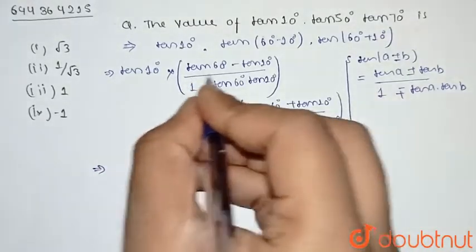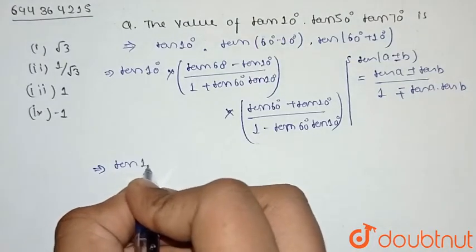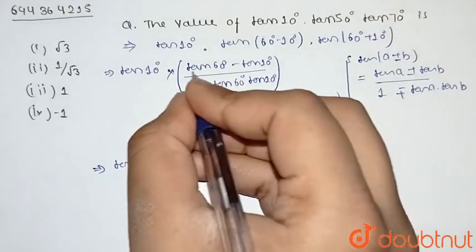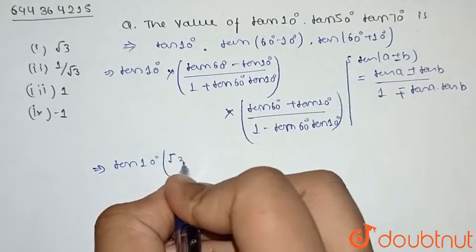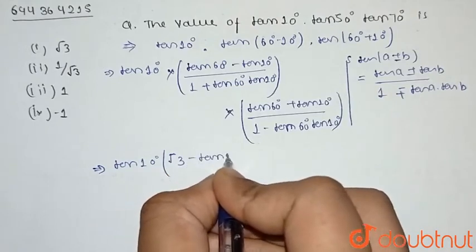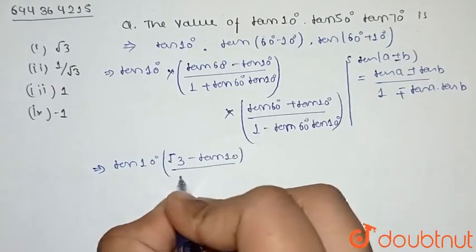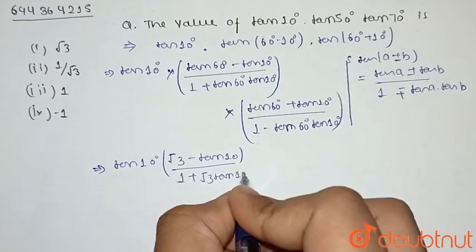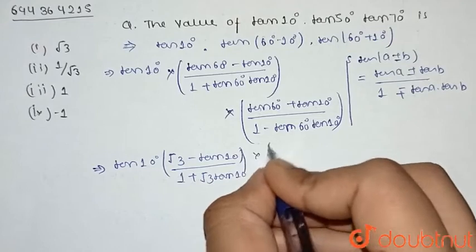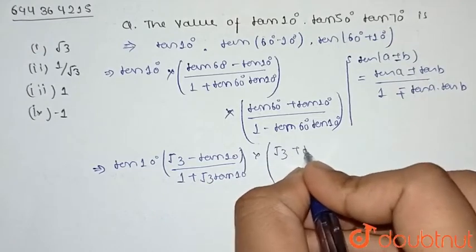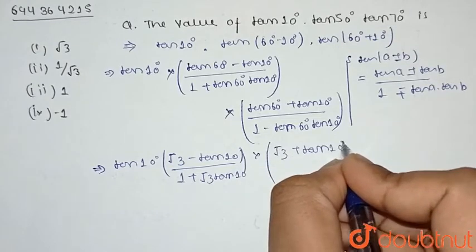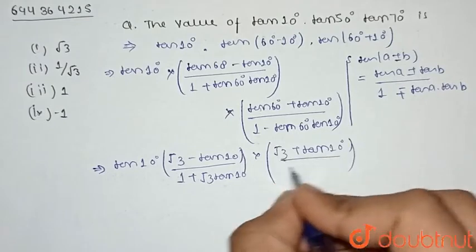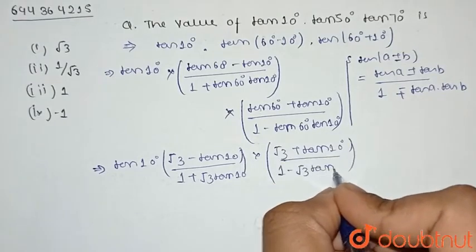We know that tan60° equals √3. So we have tan10° × (√3 - tan10°) / (1 + √3·tan10°) × (√3 + tan10°) / (1 - √3·tan10°).